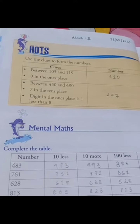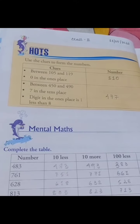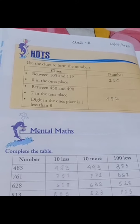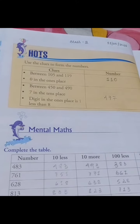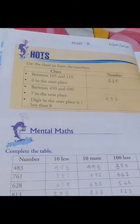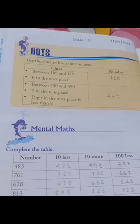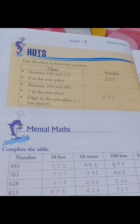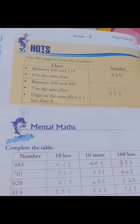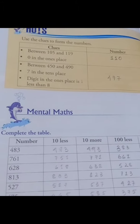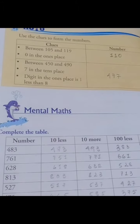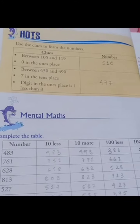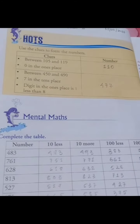Counting: 106, 107, 108, 109, 110, 111, 112, 113, 114, 115, 116, 117, 118, 119 — only 110 has 0 in the ones place. So the answer is 110.